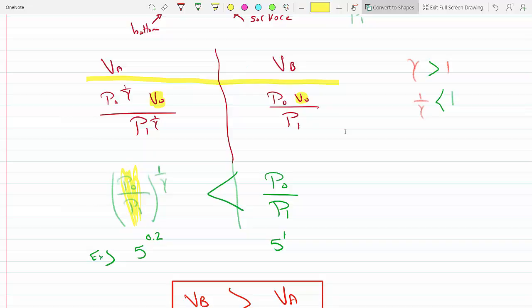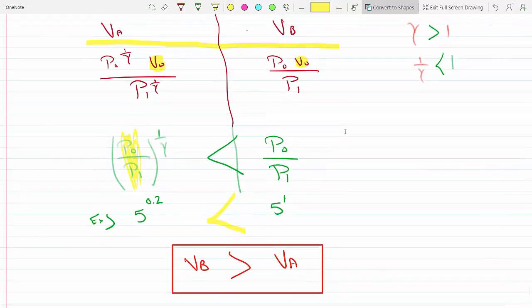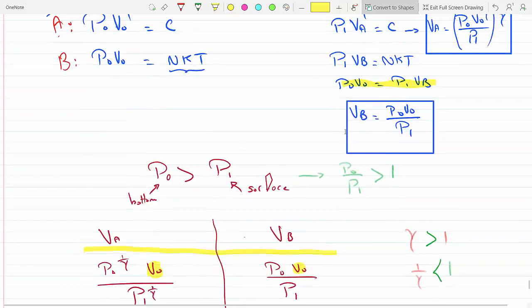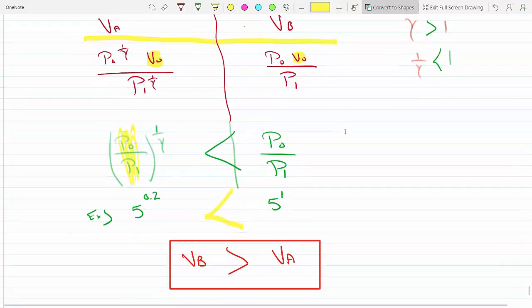Which one is bigger? Well clearly when you raise any number greater than one to a number less than one, the number gets much smaller, and therefore this side wins. As a result, we conclude that the volume of B, which is the bubble experiencing isothermal expansion, will be larger at the surface than bubble A, which is experiencing adiabatic expansion.